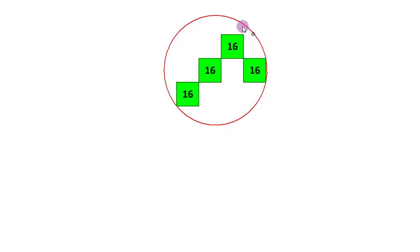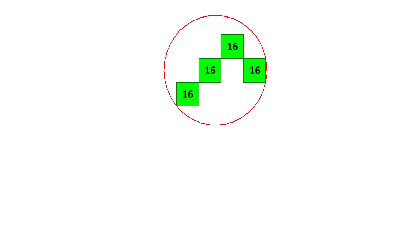Here is an interesting geometric puzzle where we have been given 4 identical squares of areas 16 square units each, and they are touching each other like this forming a chain. They are all aligned with their sides vertical and horizontal. There is a circle which is circumscribing this arrangement of squares and it is touching them at points A, B and C.